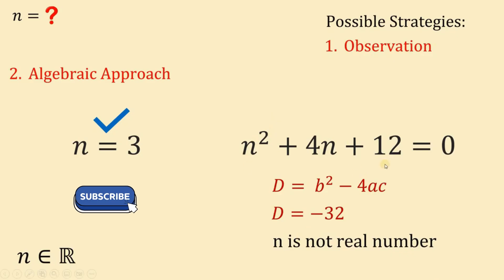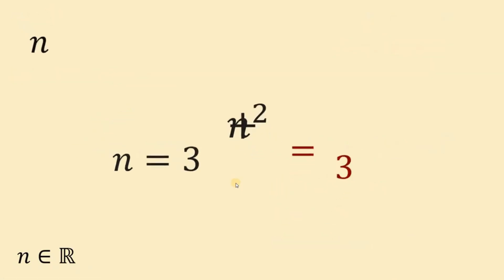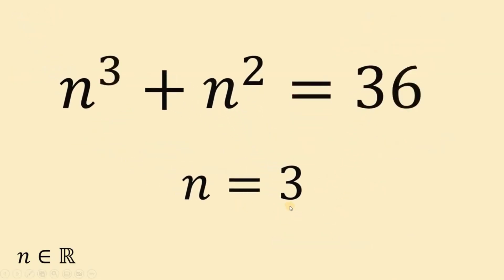So we can say that in this equation, n is not a real number. Therefore, the only real number that satisfies this equation must be equal to 3. Therefore, our answer, n equals 3. And as always, we are done.